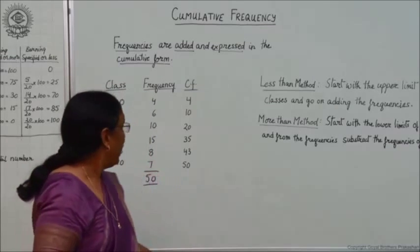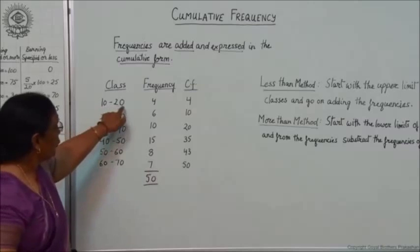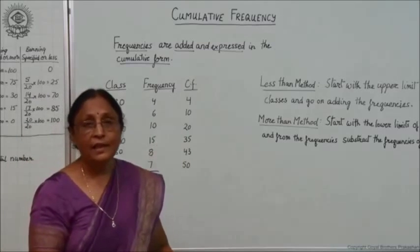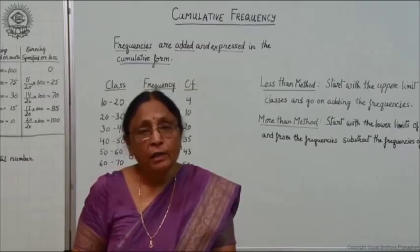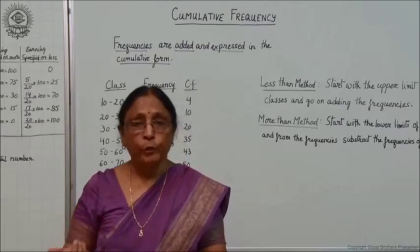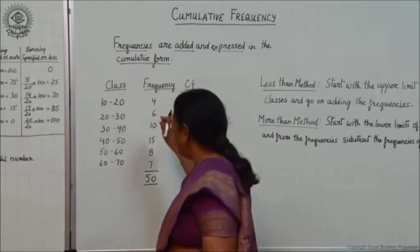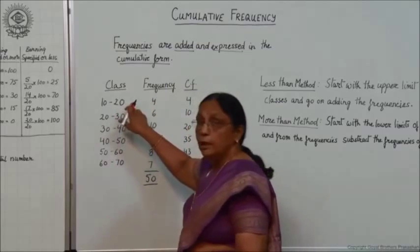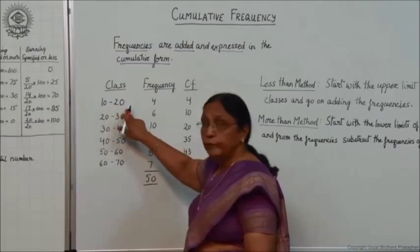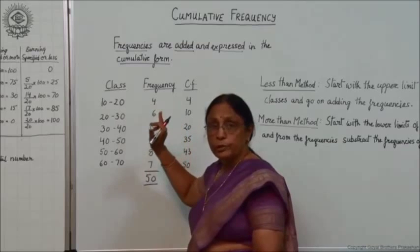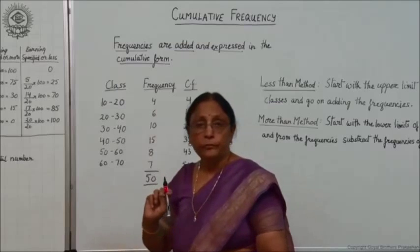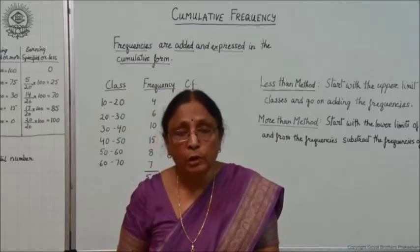In the class interval of 10 to 20, the frequency is 4. What does it mean? It means that in this class interval there are 4 individuals — for example, if you are taking marks, this shows that in the class interval 10 to 20 we have 4 number of students. Similarly, for 20 to 30 the frequency is 6, and so on.